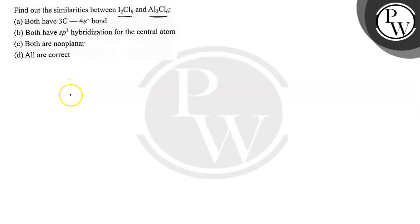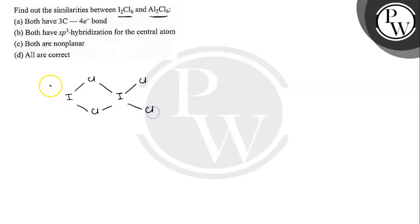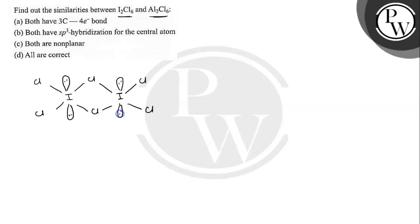Firstly we will draw the structure of I2Cl6. These are the two iodine atoms and this is the chlorine bond like this. This is another chlorine and the next two chlorine atoms. This is the lone pair of this iodine atom, and here is also the lone pair of the second iodine atom. As you can see, this is a planar molecule.